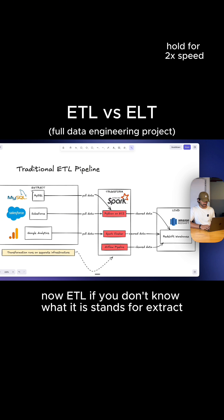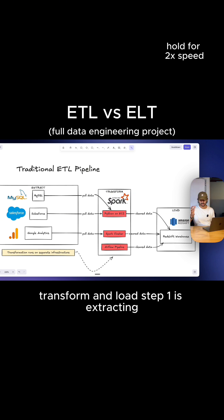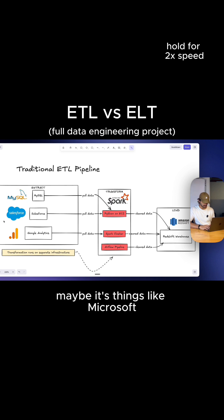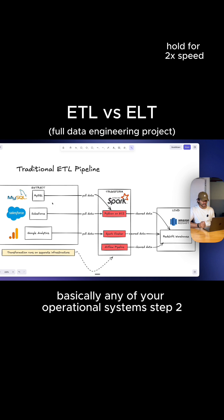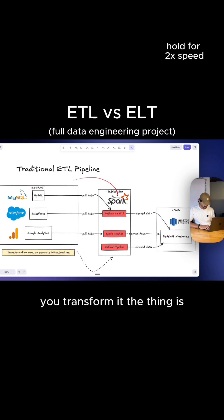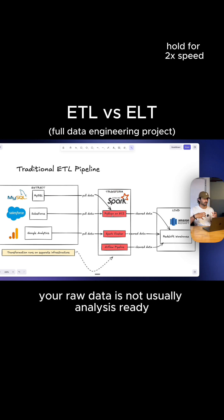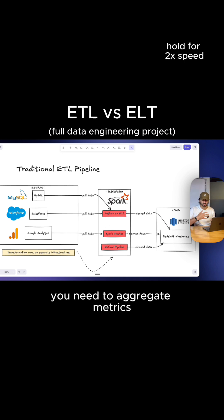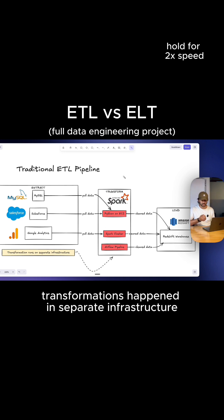ETL, if you don't know what it is, stands for extract, transform, and load. Step one is extracting — you pull data from your source systems, things like MySQL, basically any of your operational systems. Step two is transforming it. Your raw data is not usually analysis-ready; you've got to join tables together, aggregate metrics, clean up the data, and reshape it.